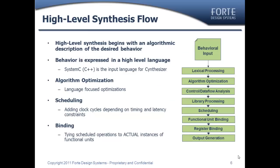This graphic shows a basic high-level synthesis flow. The behavioral model is input, it is read, the algorithm is processed, and a number of algorithmic optimizations are implemented on the design. These tend to be language-focused and are very similar to compiler-type optimizations you would imagine in a regular C compiler. We then build a control and data flow graph, analyze that, perform optimizations, and deal with the libraries — including extracting timing information from various functional units.